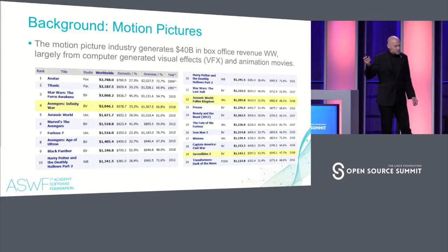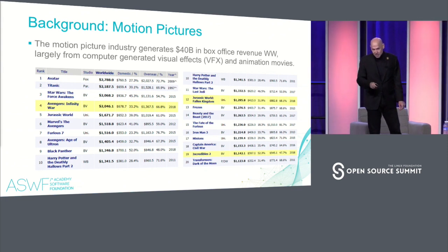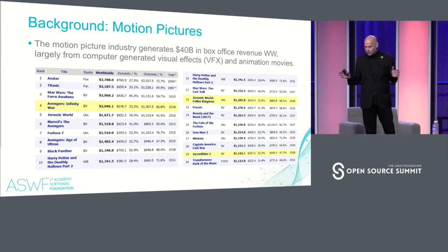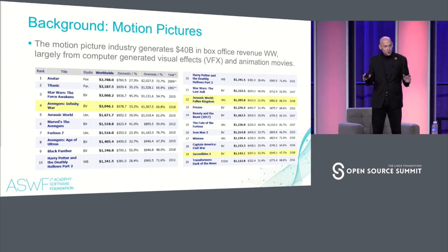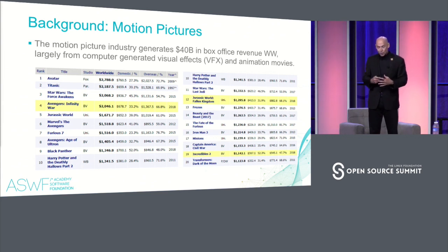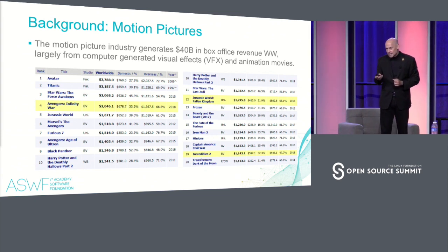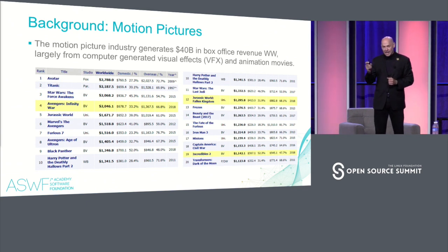What I want to do in the next 10 minutes is give you an overview of where we came from — a story you'll be very familiar with from other industries, but with a flavor specific to the motion picture business. What you have on screen right now is the top 20 movies of all time by box office revenue. The motion picture business in theatrical box office makes about $40 billion a year worldwide — just for tickets sold when you go to the movies.